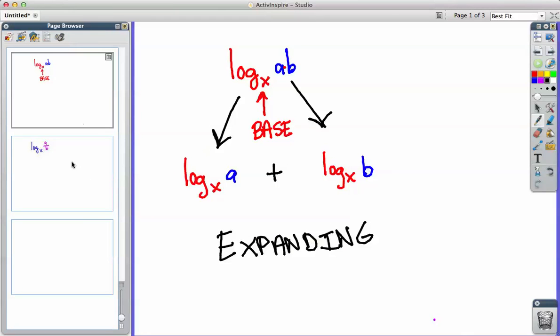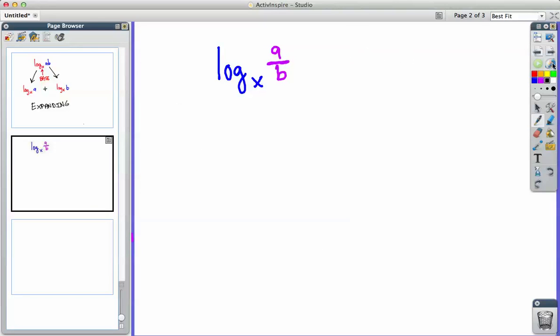Another way to expand the logarithm is if you have a division problem. So in this case, again it's two steps. We have the base, which is the log of x is the base here. And so we write that on both sides. We have log of x and log of x. But in this case, we have a right here and b right here. But this time instead of multiplying we're dividing. So we do the same thing, we put a and b. But instead of adding, we subtract.